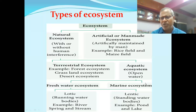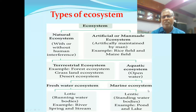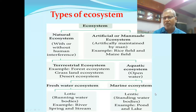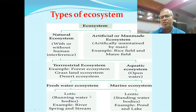Aquatic ecosystem is of two types: the lentic freshwater ecosystem, where salt content is very low, and the marine ecosystem, where salt content is more. Marine ecosystem includes seas and oceans.